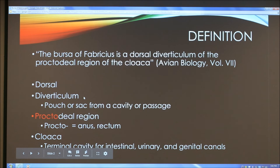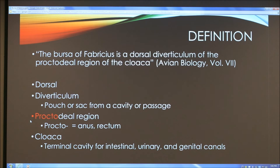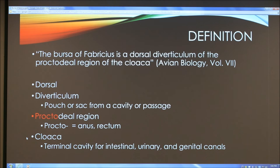Second, diverticulum means a pouch or sac from a cavity or passage. That means the bursa of Fabricius is a sac or pouch on the upper side of the bird. We can figure out what proctodial means using the prefix procto, meaning anus or rectum. Finally, cloaca refers to the terminal cavity for intestinal, urinary, and genital canals in non-mammal vertebrates and some invertebrates. The cloaca has a vent which releases waste from the animal. So the bursa of Fabricius is a pouch in the region of the cloaca on the dorsal area.